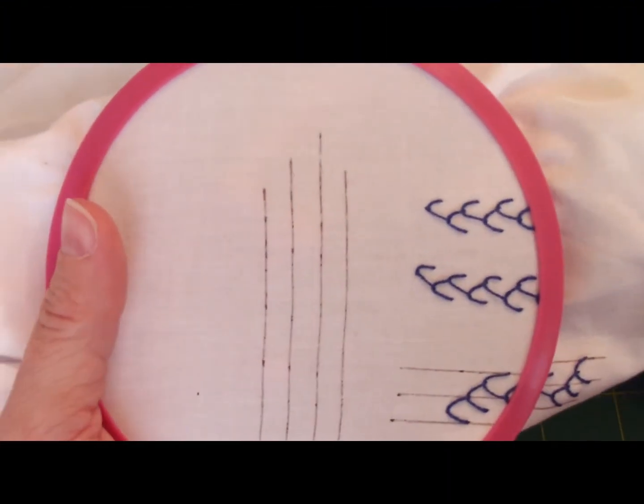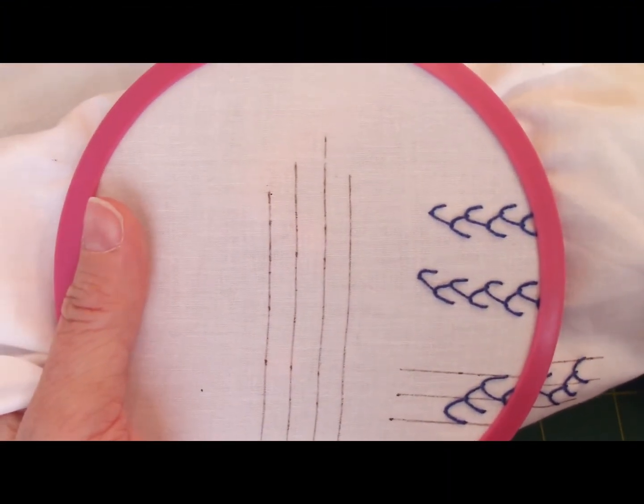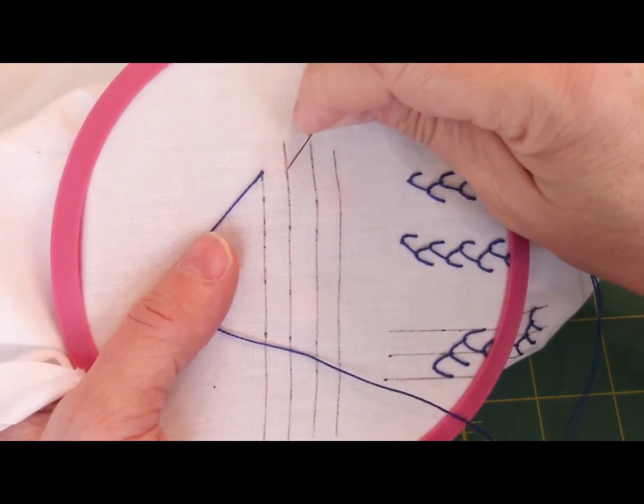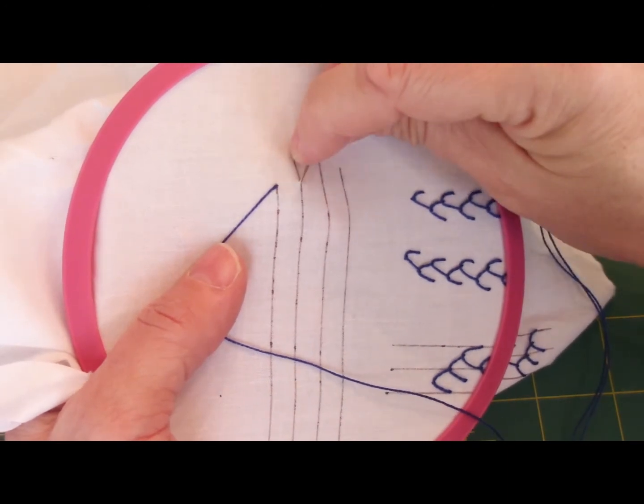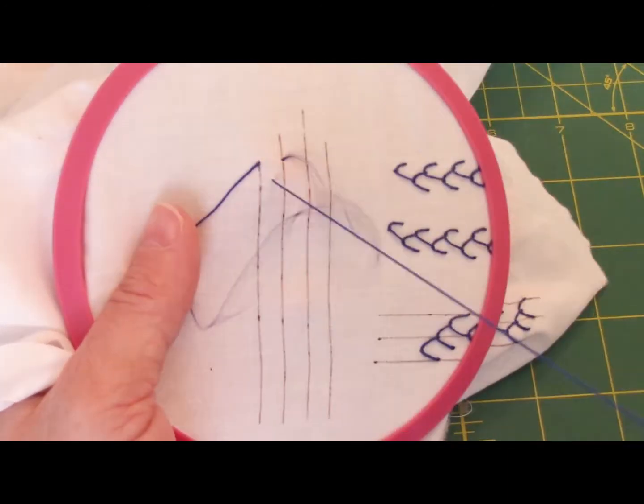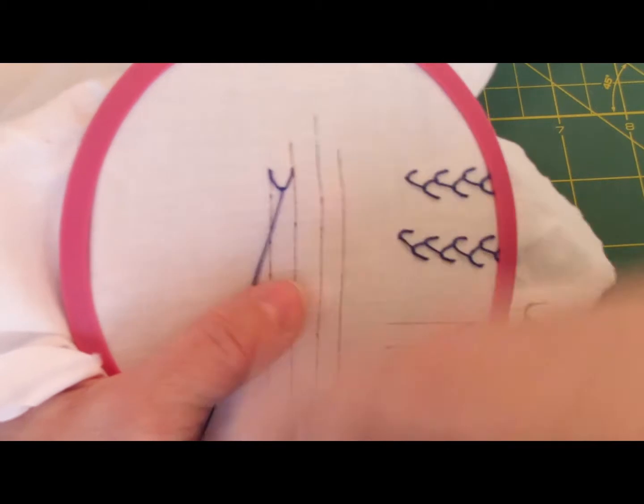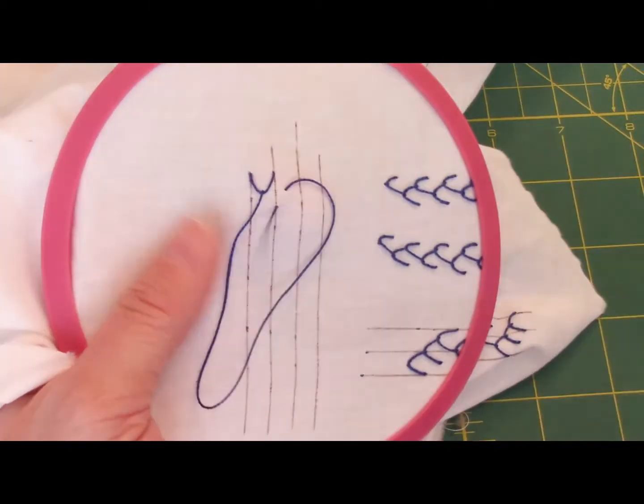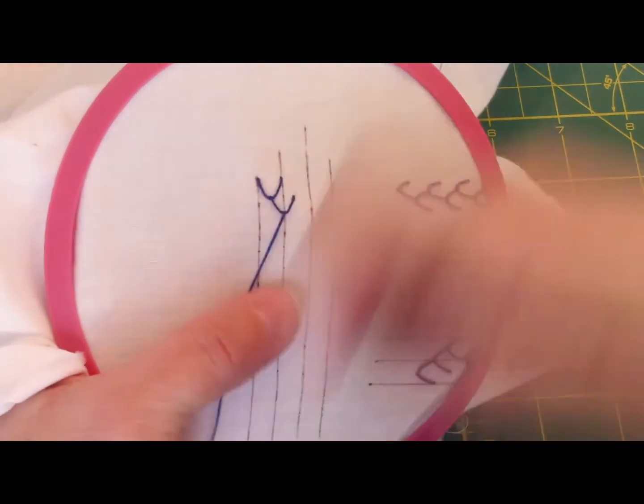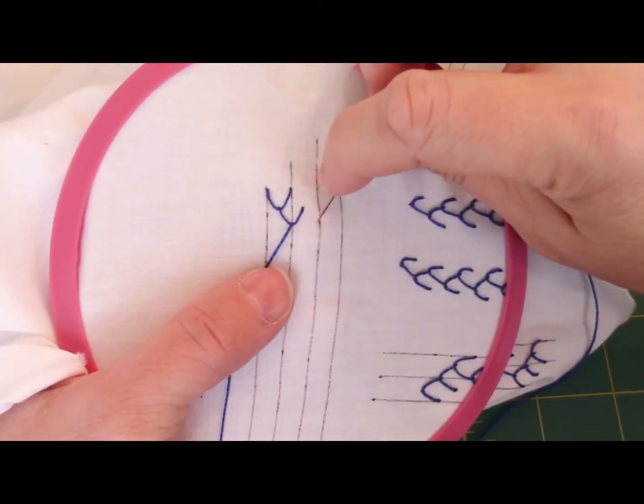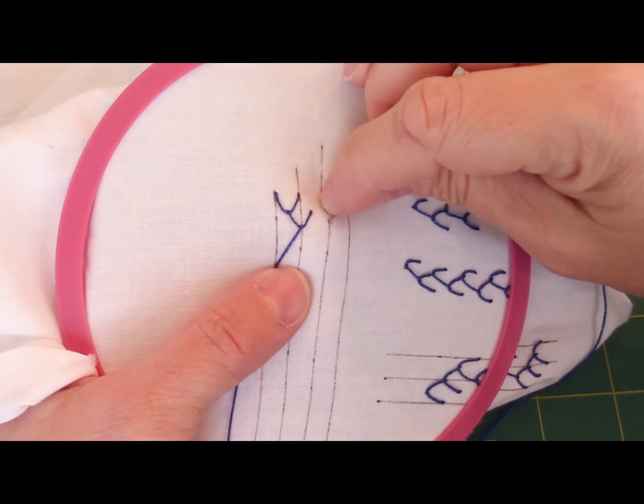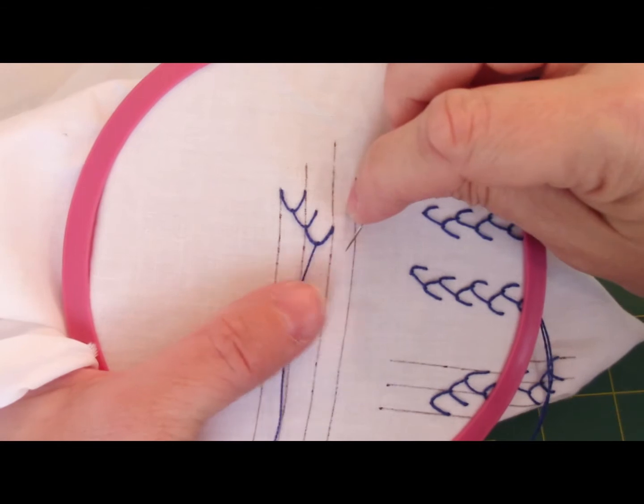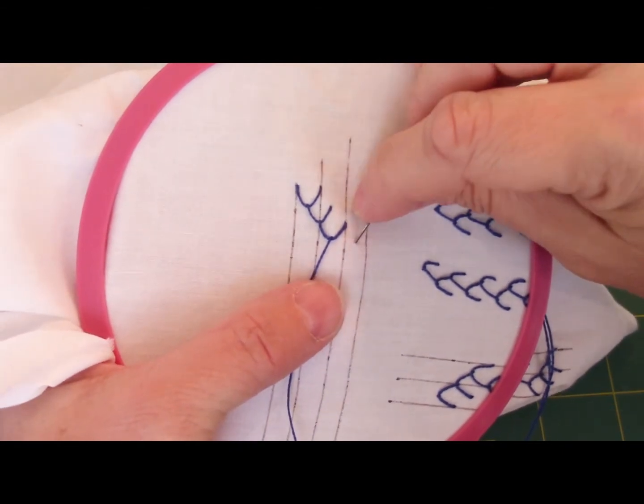You can make it even wider, just add more lines, so I'm going to start the same way. I'm going to work my first stitch between the line, my next one on the line, and again, between the line, and then on the line.